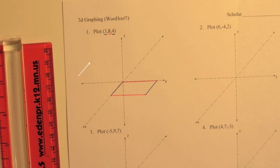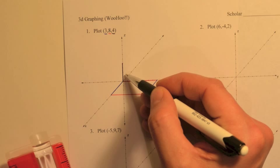And then next, take a look at the z-coordinate. So the z-coordinate is the up and down direction. And since this is a positive z, we're going to move 4 units up.